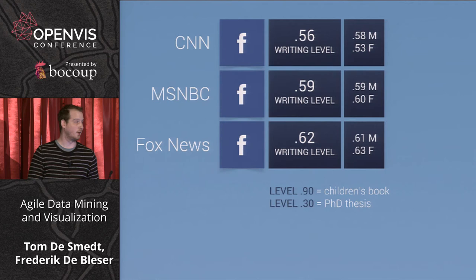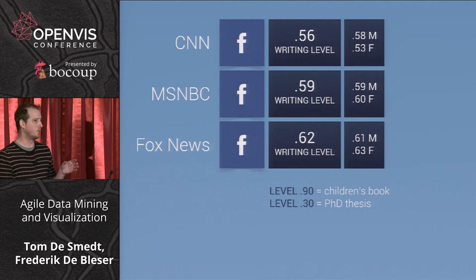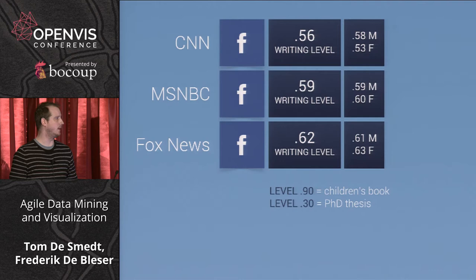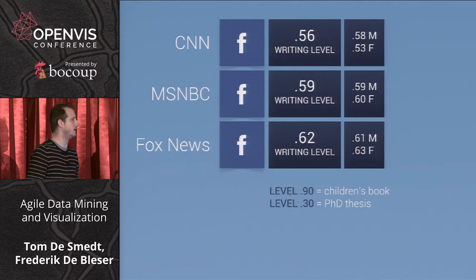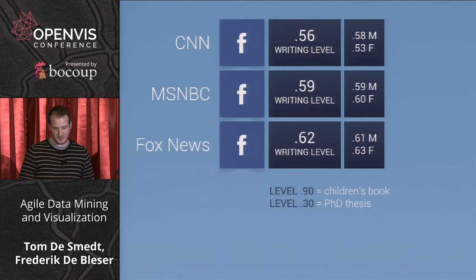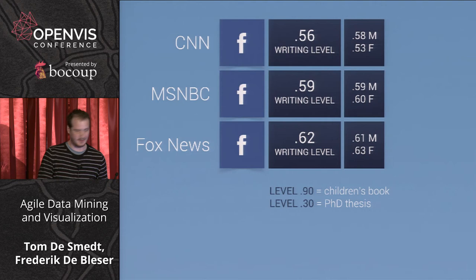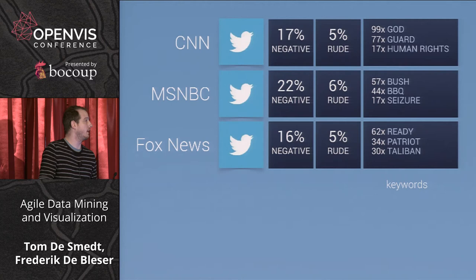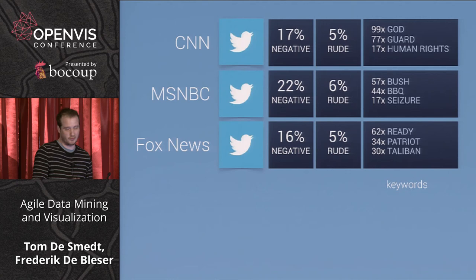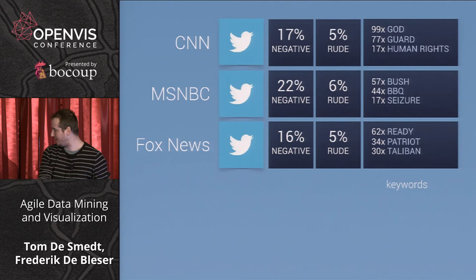Another experiment looks at writing level: a score of 100 would be children's books like 'The Cat in the Hat,' while 30 would be a PhD thesis. There's some difference between CNN, MSNBC, and Fox News. Interestingly, even though very few women comment on CNN, they are the ones using the most sophisticated language — though again it could be data bias. For Twitter, there's more negative feedback on MSNBC, and some difference in topics covered. I'll hand the word back to Frederick.